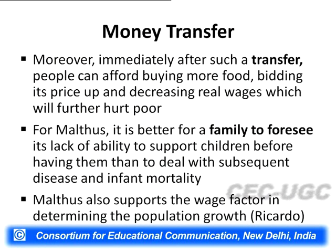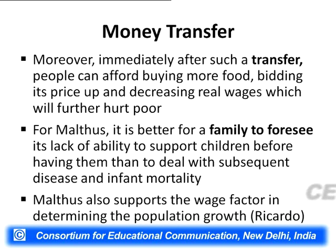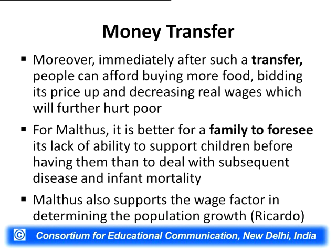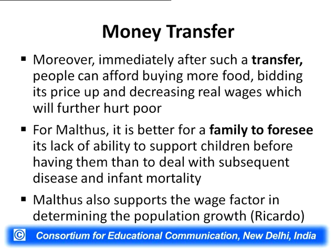If they will get the transfer, they will afford buying more food. Since there will be bigger demand for more food, prices of food will go up and the real wages from their labor will decrease, further hurting the poor. Malthus said that instead of transferring money to the poor, we should restrict our family so as not to exert excessive pressure on the resources. For Malthus, it is better for a family to foresee its lack of ability to support children before having them, than to deal with subsequent disease and infant mortality.